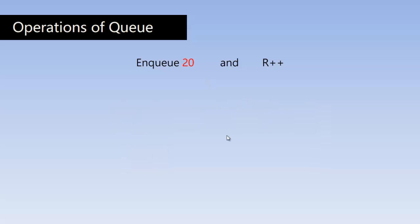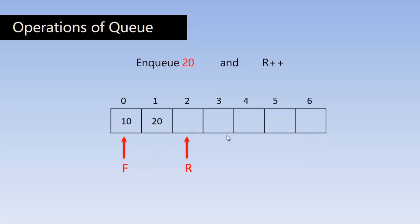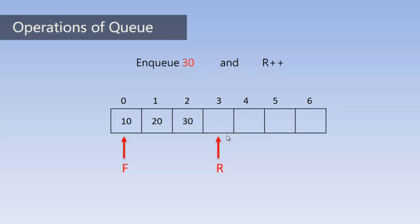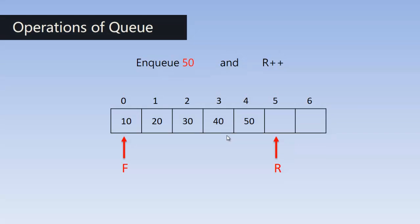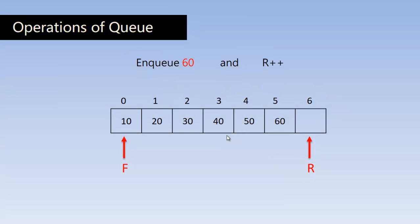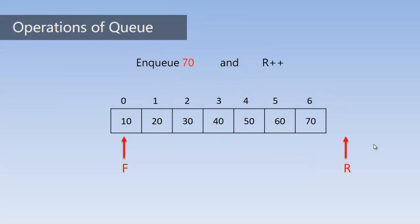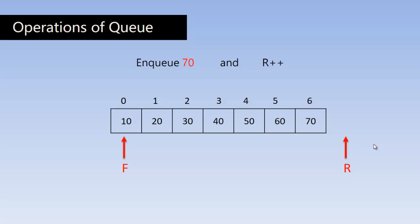So now we will enqueue 20 and increment the rear pointer. So 20 will take the second place and R will move to the third position. So this is enqueue 30, enqueue 40, enqueue 50, enqueue 60. And when we enqueue 70 the rear pointer is pointing to the next location which is handled by our program.